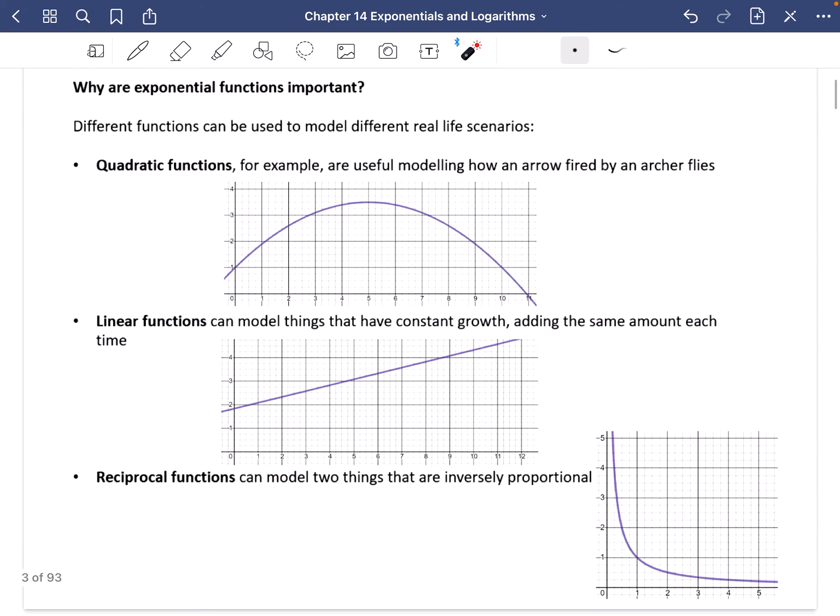But before we do that, why do we want to explore them? So I've written here, why are exponential functions important? Well, different functions can be used to model different real-life scenarios. So I'm going to do a bit of a recap here. Quadratic functions, for example, are useful for modelling how maybe an arrow is fired by an archer. And you can see this is a good model to think about how that arrow going up in the air would fly through the air and fall into the ground. Linear functions that we've looked at in chapter 5 can model things that have constant growth, adding the same amount each time. So this might be something about how the height of a plant is growing if it's growing about, if it grows the same amount each month. Reciprocal functions can model two things that are inversely proportional to each other. And they produce this kind of graph that we've seen before here.